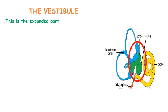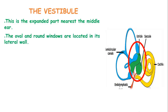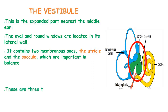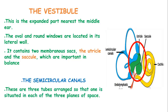The vestibule is the expanded part nearest the middle ear. The oval and round windows are located in its lateral walls, and it contains two membranous sacs — the utricle and the saccule — which are important in balance. The three semicircular canals are three tubes arranged so that one is situated in each of the three planes of space. They are continuous with the vestibule and are also important in balance.